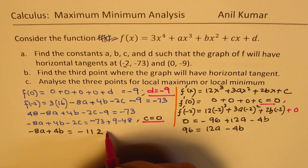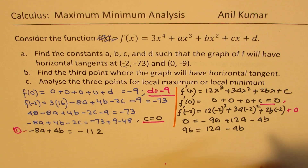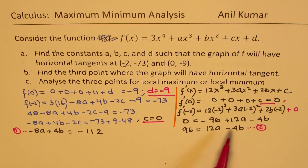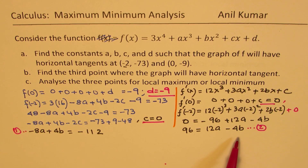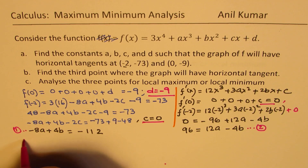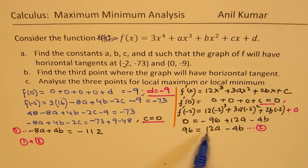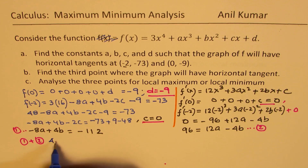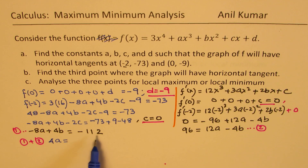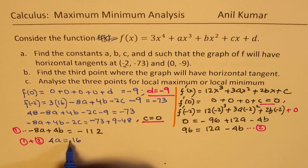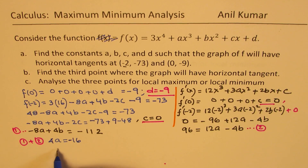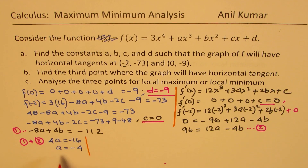Adding equation 1 and equation 2 together: the 4b terms cancel, giving (-8a + 12a) = (-112 + 96), so 4a = -16. Therefore a = -4.